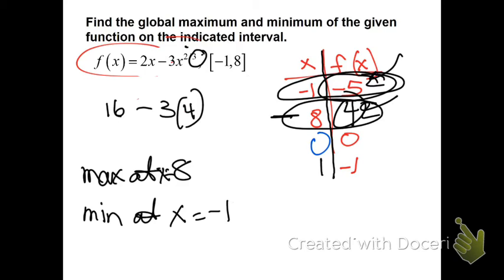So when do you use this? If I ask for max or min on a closed interval, you don't do a first derivative sign chart — you could, but it's a waste of time because you still have to check those critical points against the endpoints anyway. Good luck, guys. Hope you're doing well.